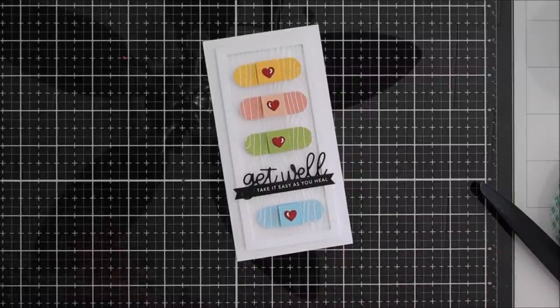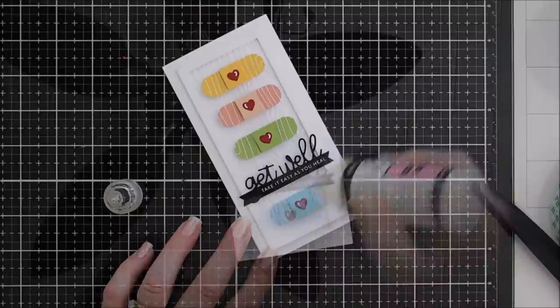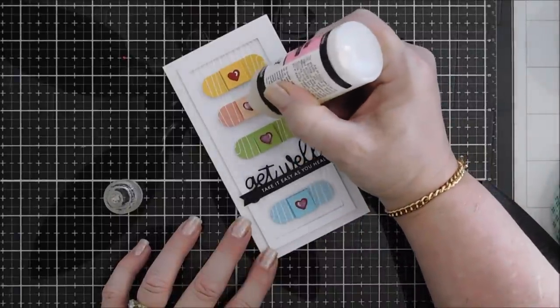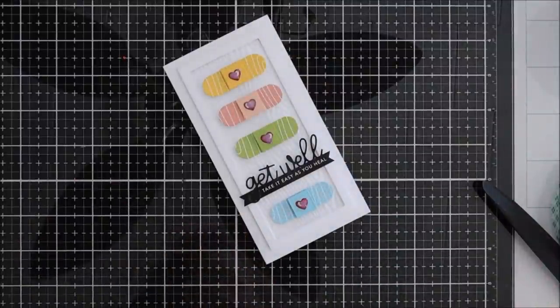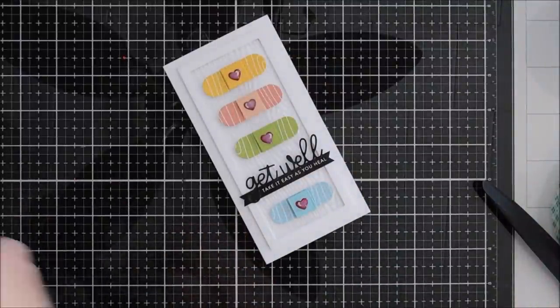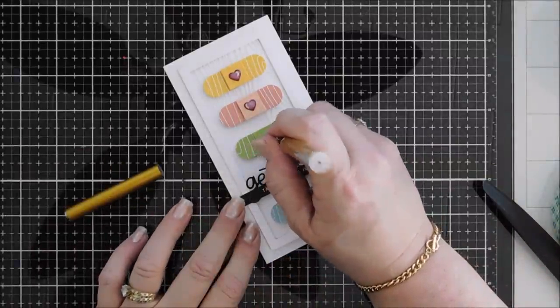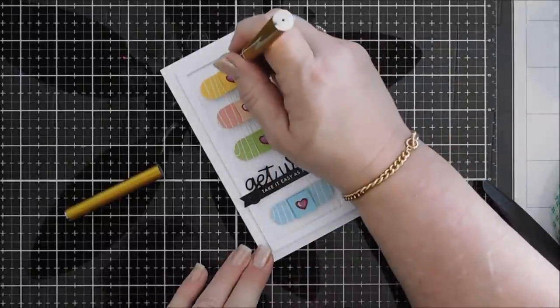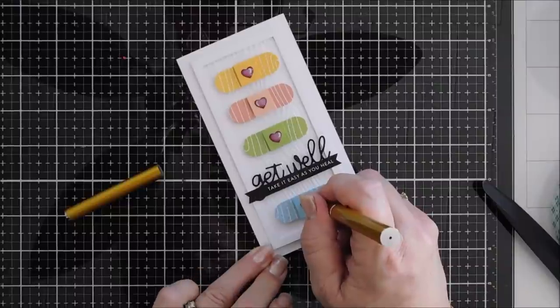And then last but not least I'm going to use glossy accents and go over each one of these little hearts. It's going to add dimension and it's also going to make my little hearts shiny. And then that finishes my card today for Try It Out Tuesday. Everything's listed below and I hope you enjoyed my project. I actually oozed out over the heart. So I'm taking the reverse side, that little barrel part of your jewel tool to clean up the edges. It works great for that. And I've had a lot of people ask about my jewel tool. I'll list it down below if you guys want to check it out.